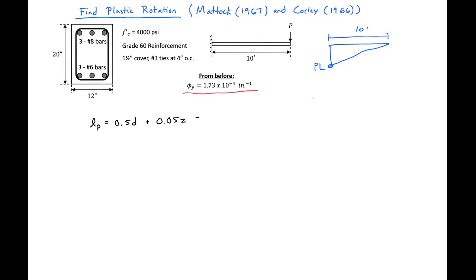We'll plug in our D and our Z. So we'll have 0.5 times our D which is 17.63 inches plus 0.05 times 10 feet, and we need to make sure our units are consistent. So 12 inches per one foot to get our hinge length of 14.82 inches.